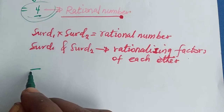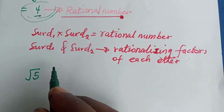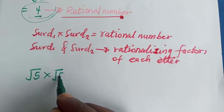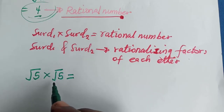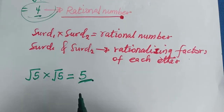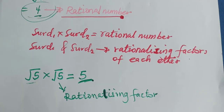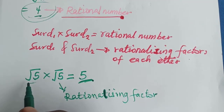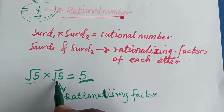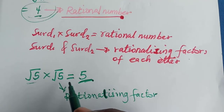Let's consider root 5. What will I multiply root 5 with to get a rational number? You can multiply root 5 by root 5. Root 5 by root 5 gives me 5, which is a rational number. So this root 5 is a rationalizing factor of this root 5. The process of multiplying root 5 by root 5 to get a rational number — that's what we call rationalization.